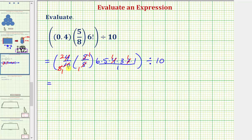So everything inside the parentheses simplifies to 180, and then we have divided by 10. So again, 180 divided by 10 is equal to 18. So the given expression simplifies nicely to 18. I hope you found this helpful.